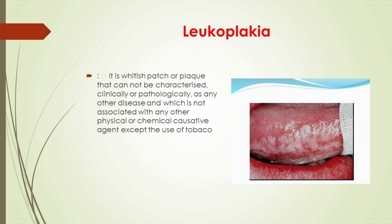Leukoplakia is a whitish patch or plaque that cannot be characterized clinically or pathologically as any other disease and is not associated with any physical or chemical causative agent except the use of tobacco. It can occur everywhere in the oral cavity, but the tongue is one of the commonest sites. If it occurs on the tongue, it is called chronic superficial glossitis.